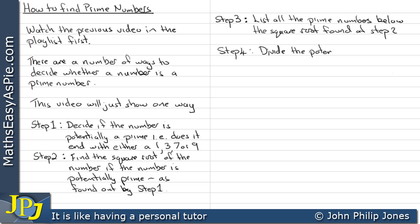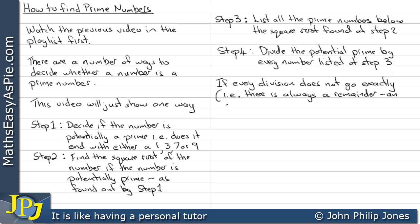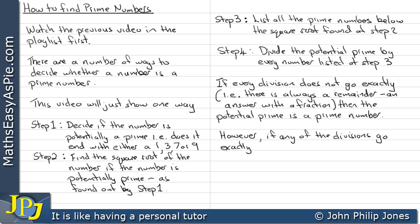Step 4. Divide the potential prime by every number listed at step 3. If every division does not go exactly, i.e. there is always a remainder, in other words an answer with a fraction, then the potential prime is a prime number. However, if any of the divisions go exactly, i.e. no remainder, then the potential prime is not a prime number.